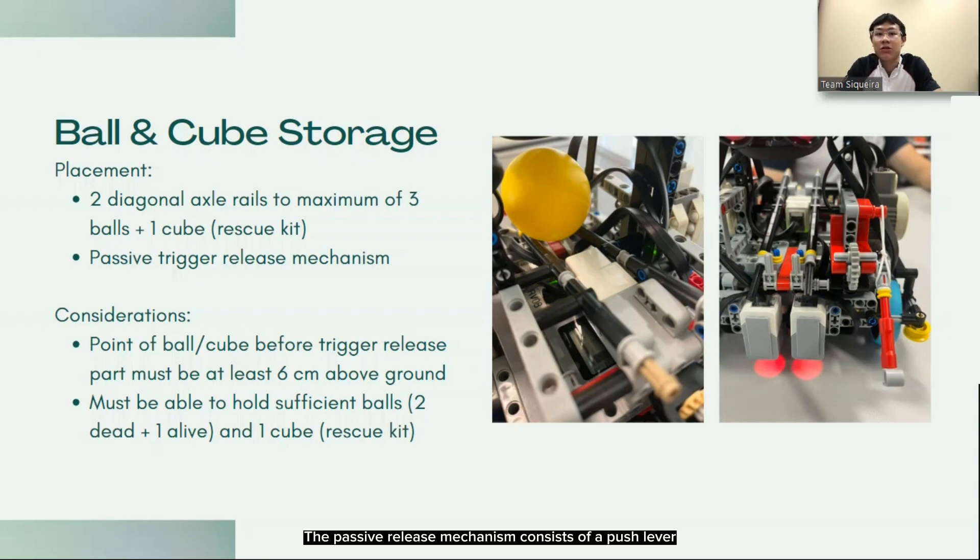The passive release mechanism consists of a push lever that is connected to a 24-tooth gear that will turn a 12-tooth gear connected to the gate holding the balls. We decided to gear up the release system as the gate needs to turn a lot more than the axle lever that will be pushed against the 6cm balls of the evacuation points.